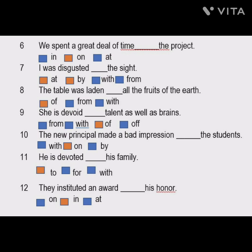The ninth sentence: 'She is devoid ___ talent as well as brain.' Options given are from, with, and of. The correct word is 'of': she is devoid of talent as well as brain.